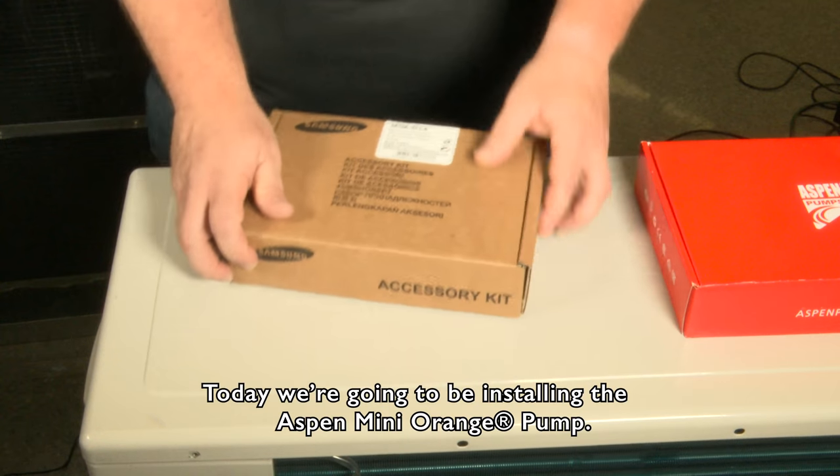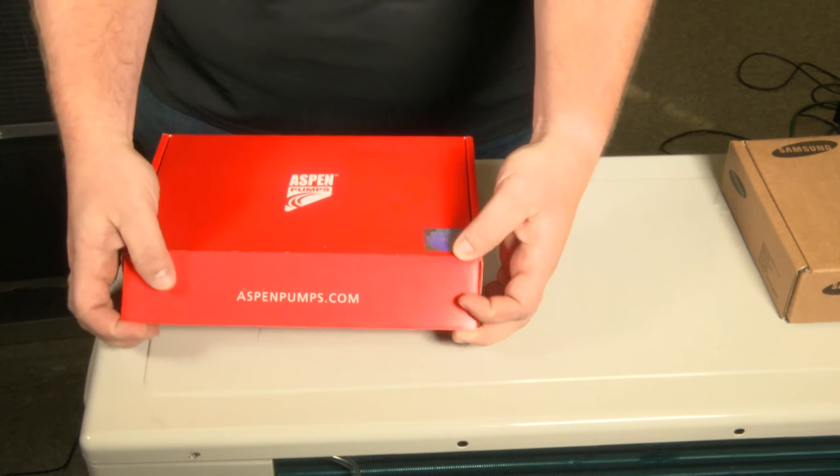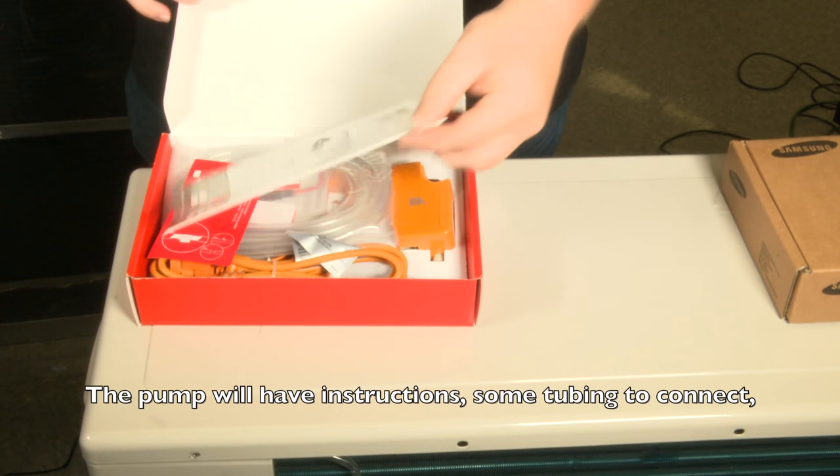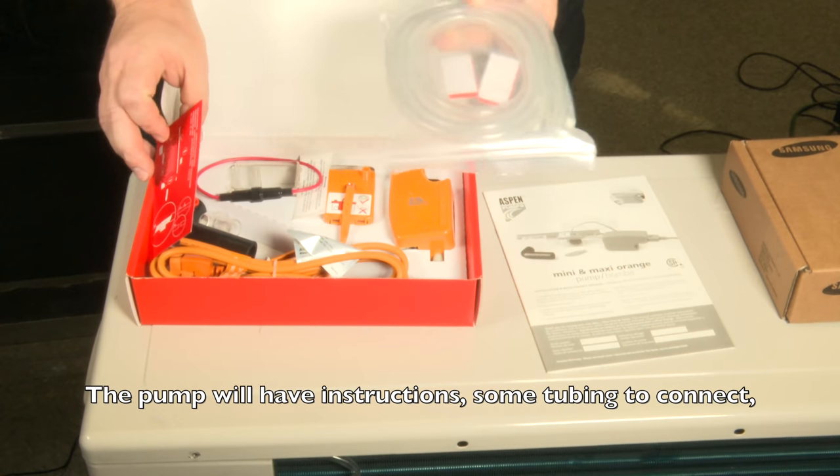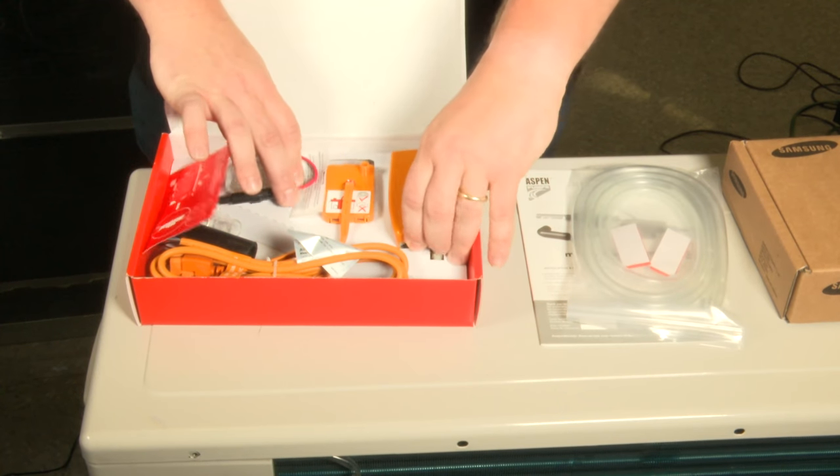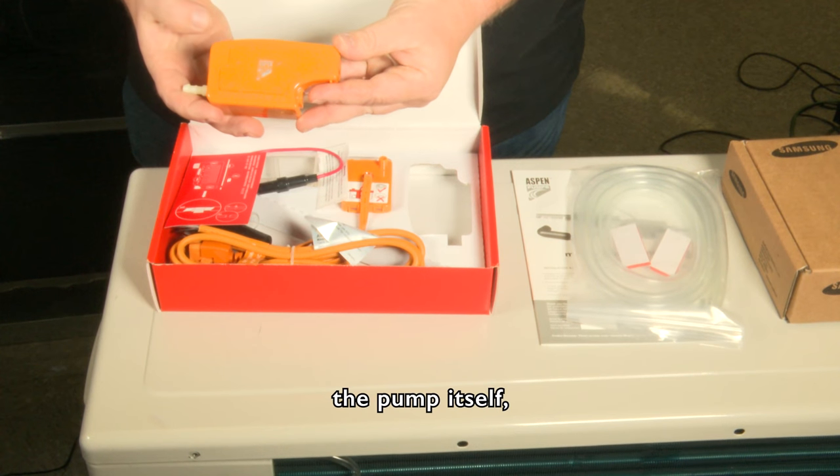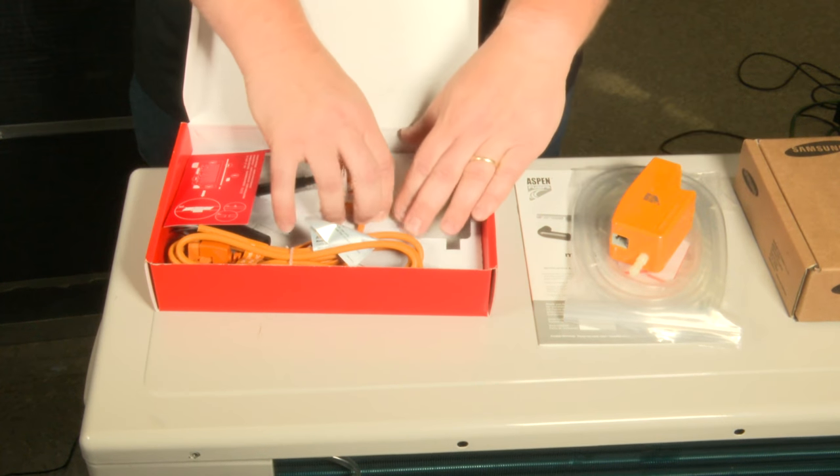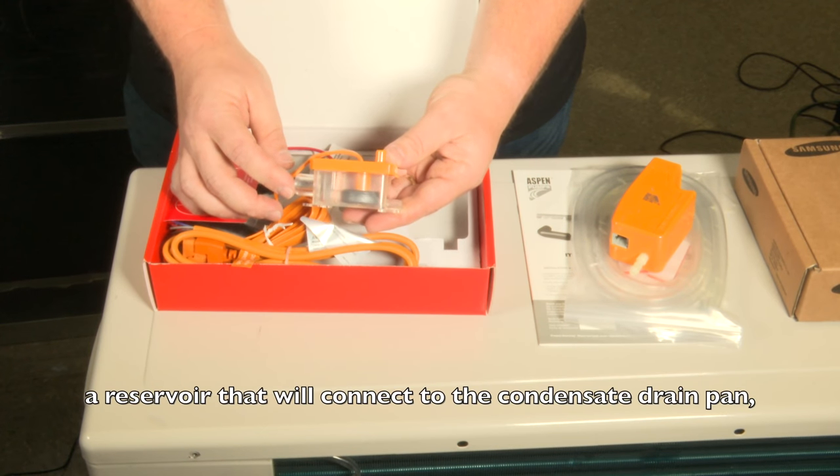Today we're going to be installing the Aspen mini orange pump. The pump will have a set of instructions, some tubing to connect, the pump itself, and a reservoir that will connect to the condensate drain pan.